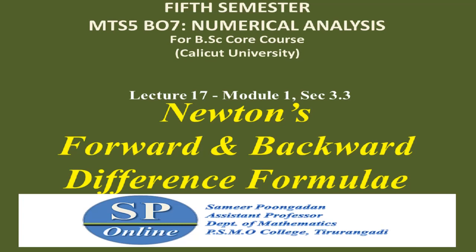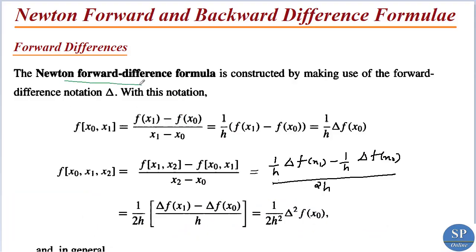In this lecture we are going to discuss Newton's forward and backward difference formula. The Newton's forward difference formula is constructed by making use of the forward difference notation delta, that is the forward difference operator, where delta of p_n is nothing but p_{n+1} minus p_n. So Newton's forward difference formula is constructed by using this forward difference operator.